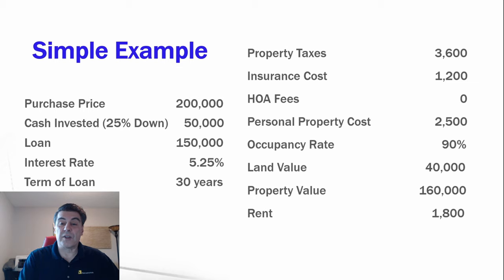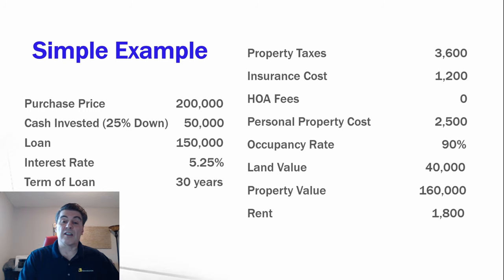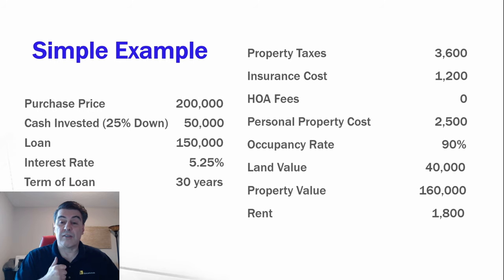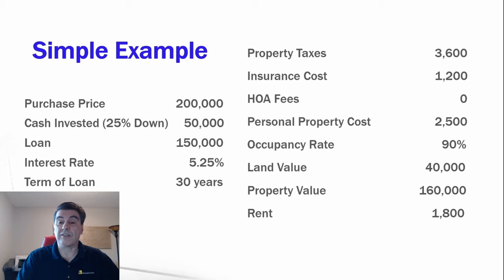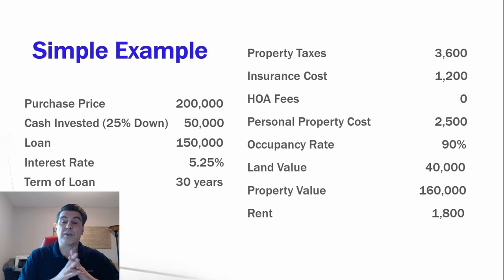Here's a simple example. The purchase price is $200,000, with 25% cash down. The loan value is $150,000 at an interest rate of 5.25% on a 30-year term. Property taxes are $3,600 and insurance is $1,200. We're not including any HOA fees in this case.